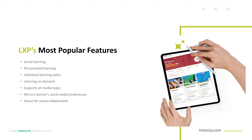LXP's most popular features include social learning, personalized learning, and individual learning paths. Since the learning experience platform is intelligent, users can log in and find relevant content waiting for them. Users can choose from courses they feel are important and choose the medium they prefer — video, podcast, articles, blogs, microlearning, and user-generated content or links. Learners want their experience to mirror social media, like Netflix or Facebook. Colleagues may add information found outside existing course materials because the LXP provides a venue for social collaboration.